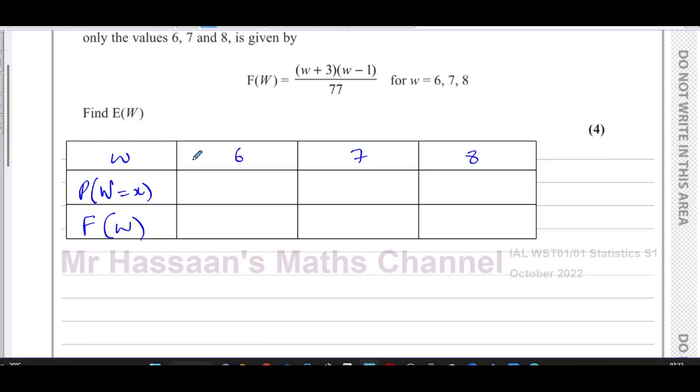So I know that when W is equal to 6, then we're going to have F(6) is going to be 6 plus 3 which is 9, times 6 minus 1 which is 5, over 77. That's 45 over 77. So this is 45 over 77, and of course that will be the same as the probability for that first one because it's like the cumulative probability.